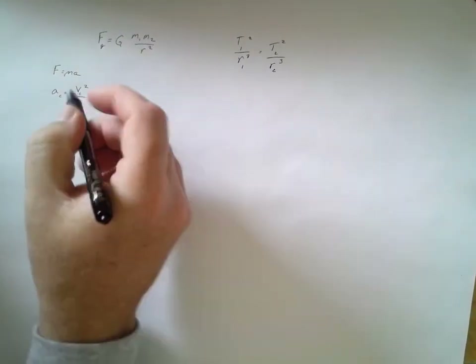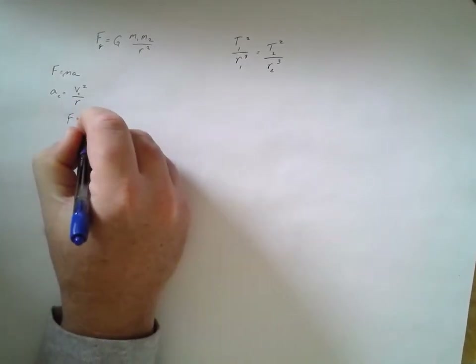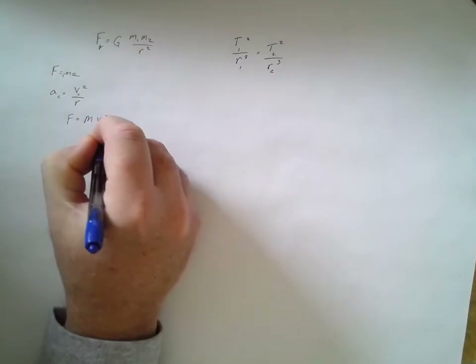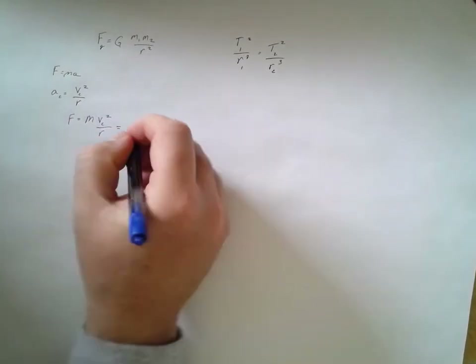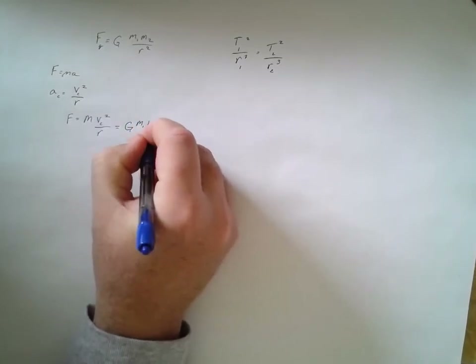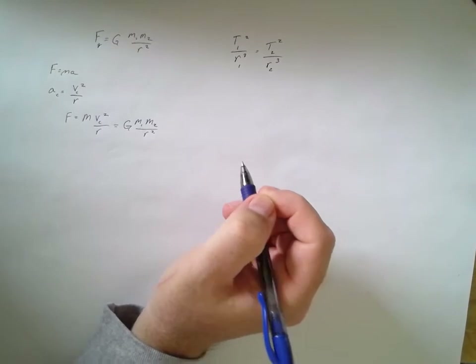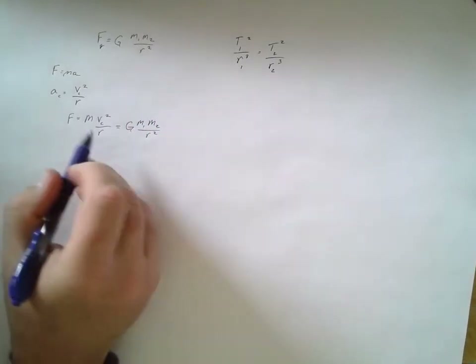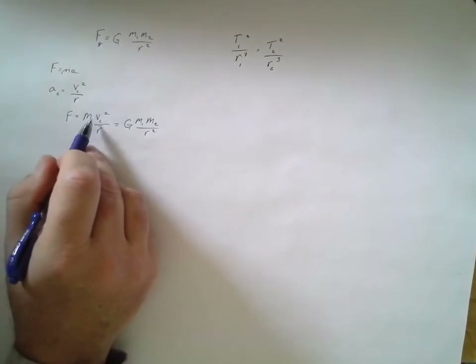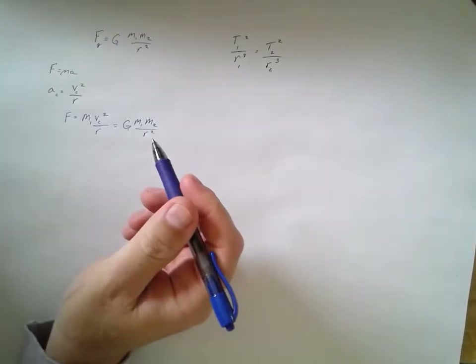Now I'm going to set up the equation. Force equals m times v_c squared over r. This is also equal to G times m1 times m2 over r squared. Looking at just the mass of the orbiting object, I'll call it m1 on both sides.